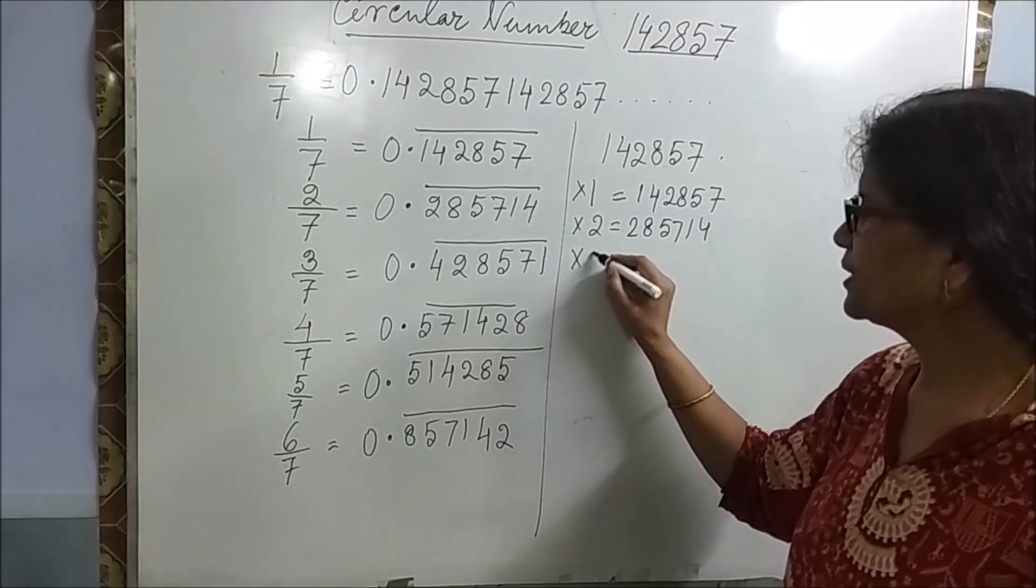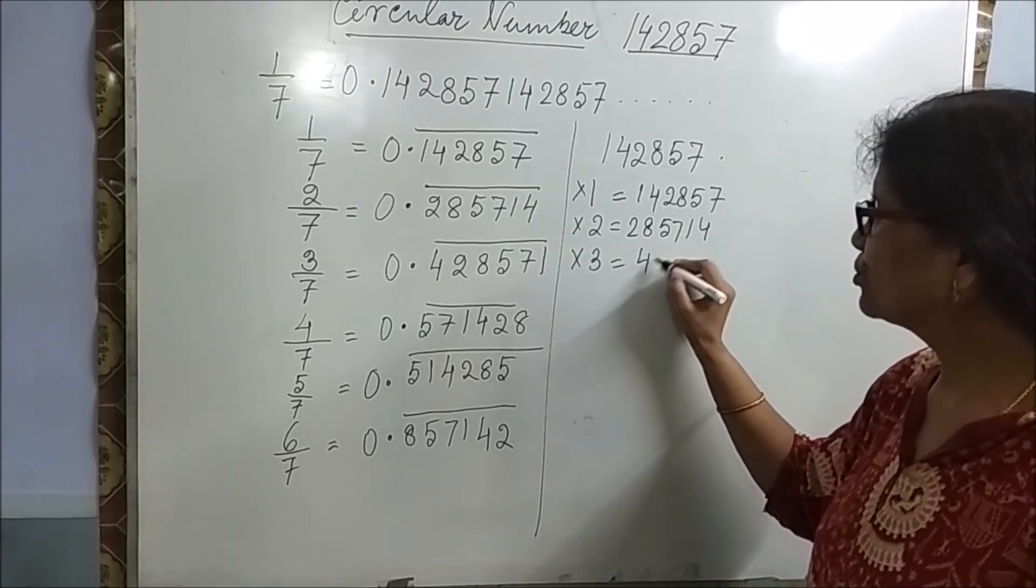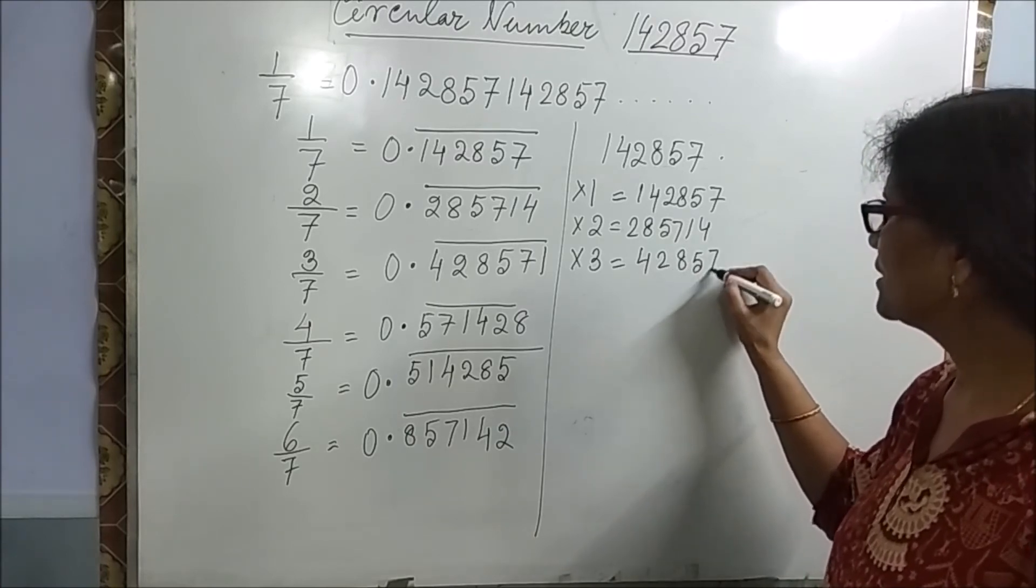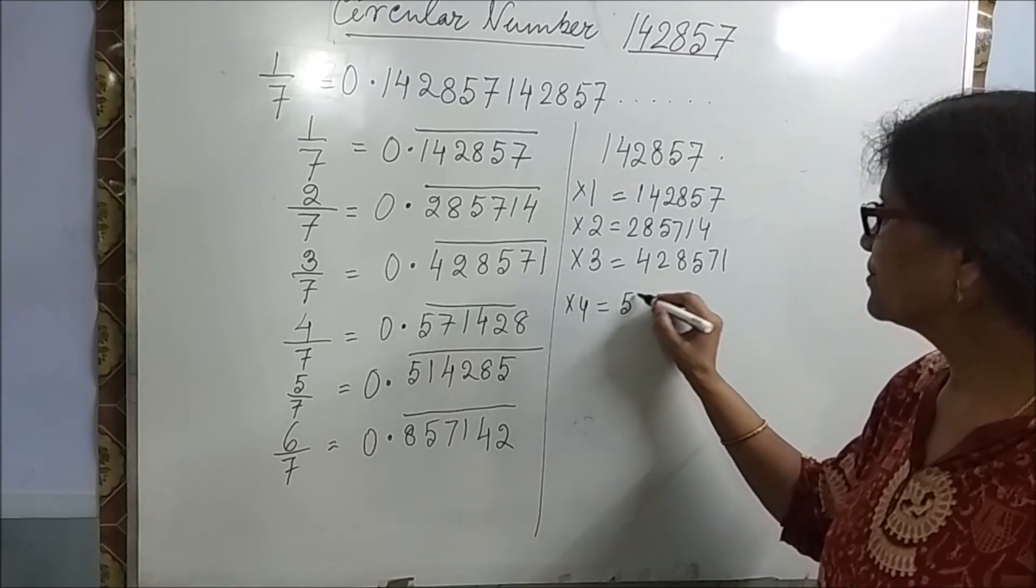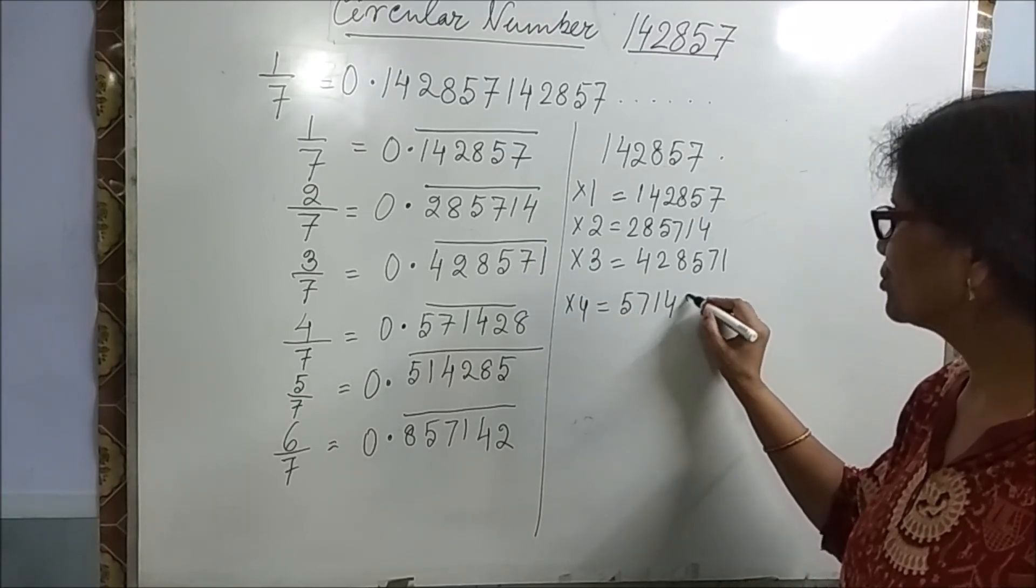It will multiply by 3. It will be 428571. Multiply by 4. You will get 571428.